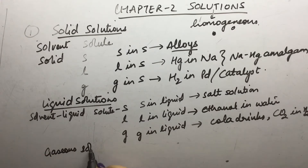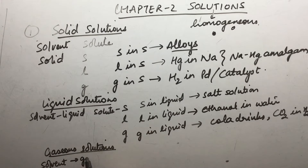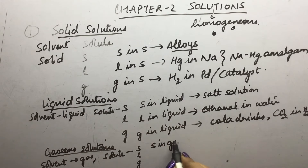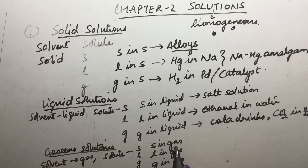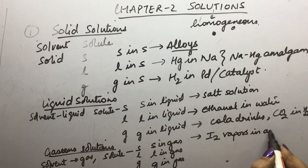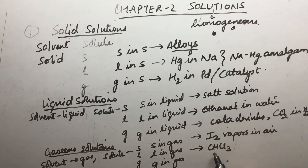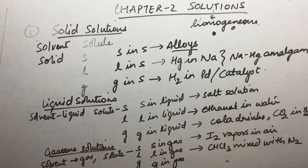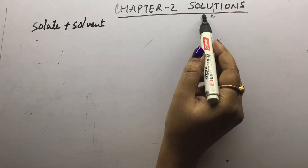The third type is gaseous solutions. In gaseous solutions, the solvent is gas. The solute can be solid, liquid, or gas — giving us solid in gas, liquid in gas, and gas in gas solutions. Solid in gas means a solid has been dissolved in gas — for example, iodine vapors present in air. Liquid in gas means a liquid mixed with gas — for example, chloroform mixed with nitrogen gas. Gas in gas — air is a very good example of a gas in gas solution. In a solution, there are two components.